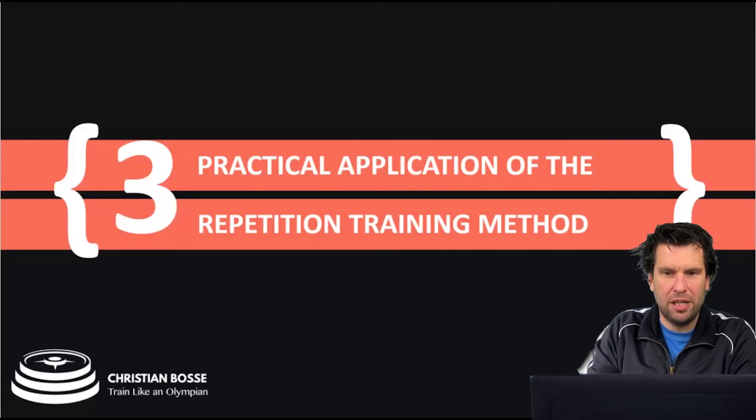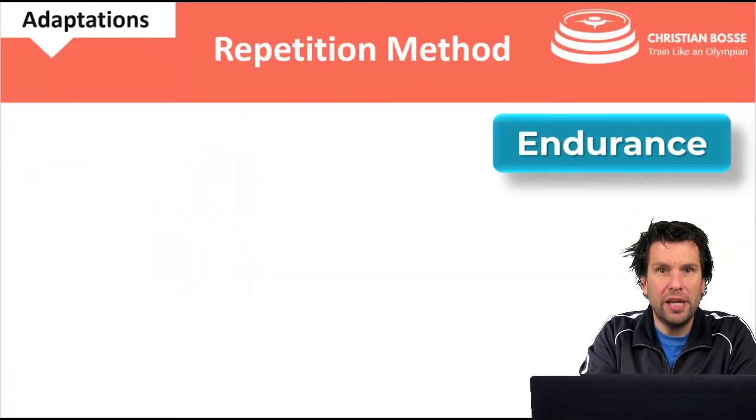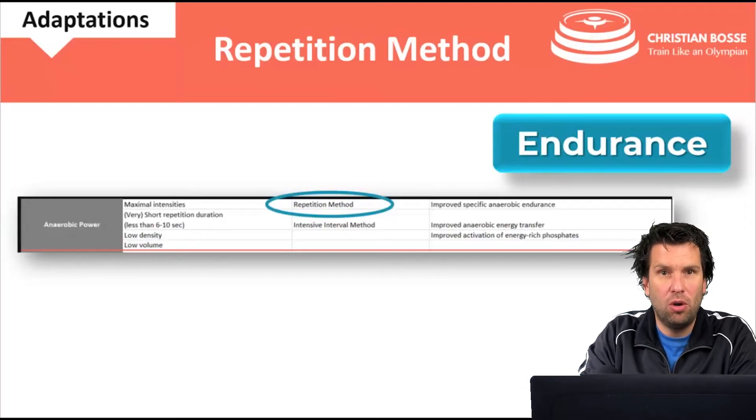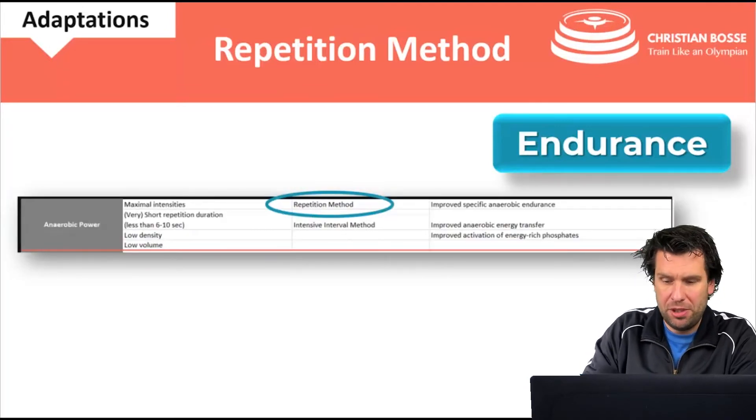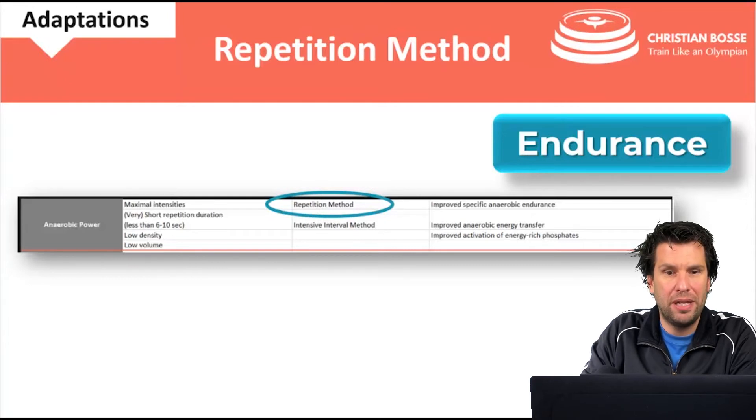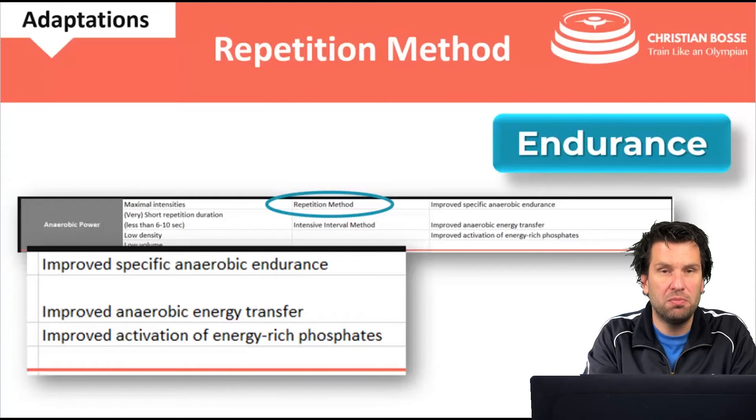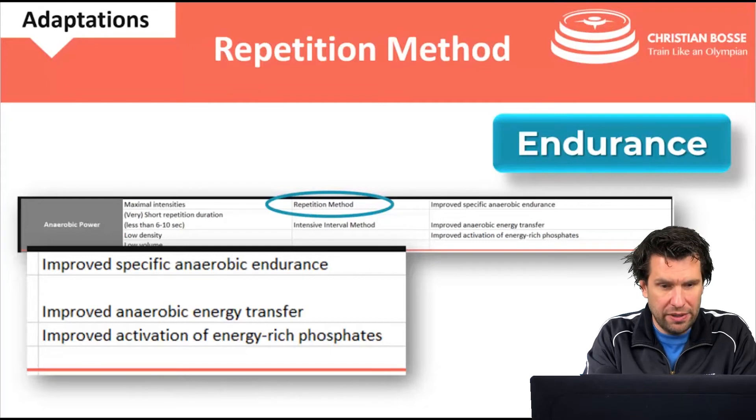So what's the practical application? If we look at endurance as an example, if we would like to work on anaerobic power, the repetition method could be one method of choice. And the adaptations: improved specific anaerobic endurance, improved anaerobic energy transfer, and improved activation of energy-rich phosphates, ATP and CP.